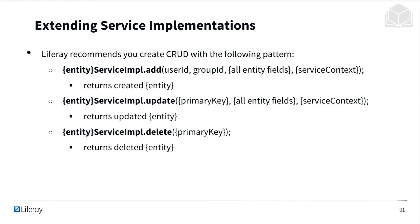The add method returns the entity you just created. It also comes with an update method, which takes a primary key referring to an existing entity, whatever fields you want to update, and an optional service context parameter, then returns an updated entity. Finally, you also have the delete method, which passes in a primary key referring to the entity and returns the deleted entity.